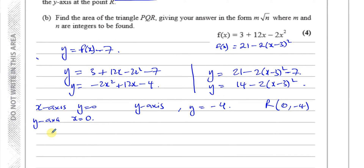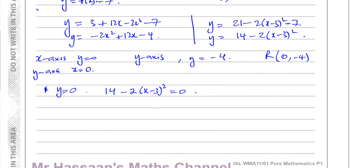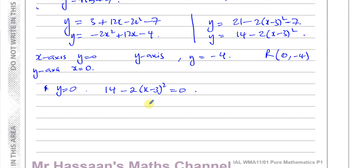Now we find where it crosses the x-axis, solving y = 0. Because we already have the equation in completed-square form, it's easy to use that: 14 - 2(x - 3)² = 0, which gives 2(x - 3)² = 14, so (x - 3)² = 7, meaning x - 3 = ±√7, and therefore x = 3 ± √7.